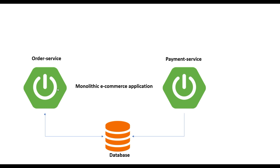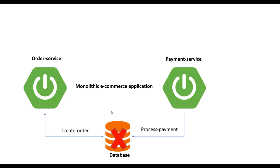In a monolithic application, the order service and payment service both point to a single database. This makes it easy to implement — the entire workflow can be considered a single transaction. It's easy to commit and rollback when everything is in a single database. For example, if order service creates an order and payment service processes the payment, in case of failure the entire data will be rolled back — not a single record will be inserted to any DB.